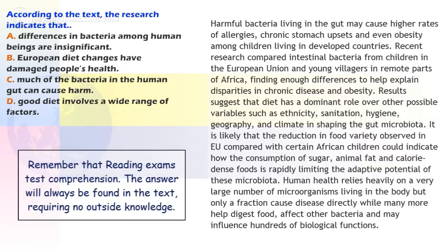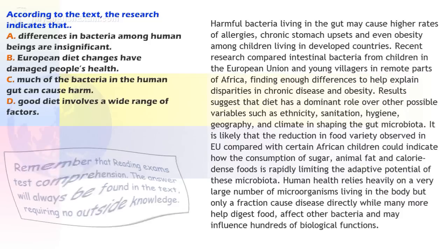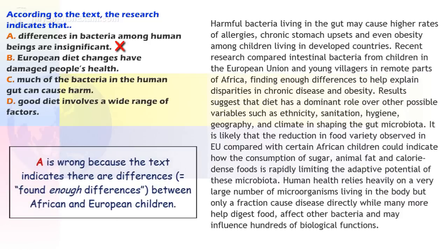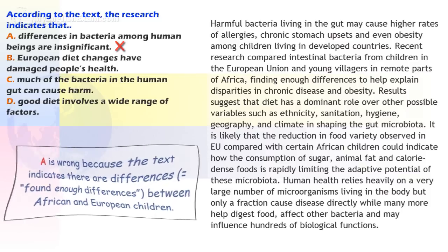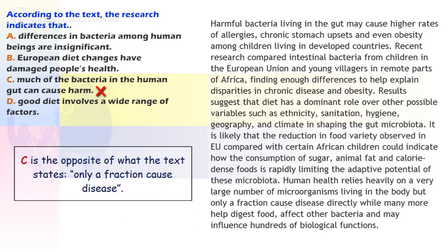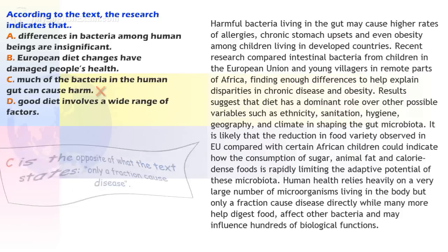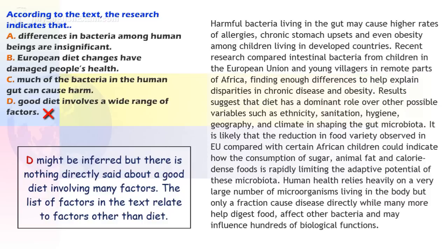Remember that reading exams test comprehension. The answer will always be found in the text, requiring no outside knowledge. A is wrong because the text indicates there are differences — that is, 'found enough differences' — between African and European children. C is the opposite of what the text states: only a fraction cause disease. D might be inferred, but there is nothing directly said about a good diet involving many factors. The list of factors in the text relates to factors other than diet.